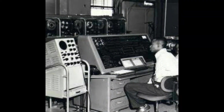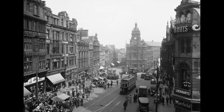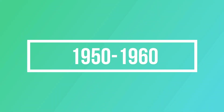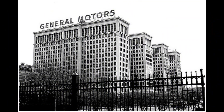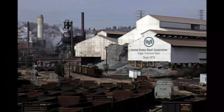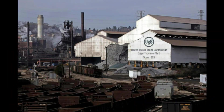Digital computers represent information in discrete form, generally as sequences of 0s and 1s. The modern era of digital computers began in the late 1930s and early 1940s in the United States, Britain, and Germany. During the 1950s and 60s, IBM and other companies made large, expensive computers of increasing power.